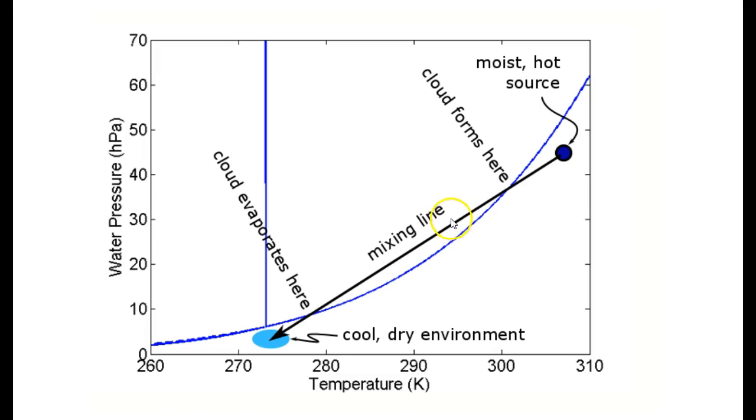If the air parcel continues to entrain the dry air, it continues along the mixing line, and it may eventually cross the equilibrium line back into the vapor region, and the cloud will evaporate.